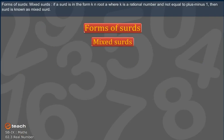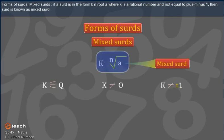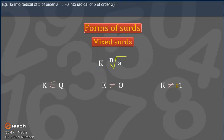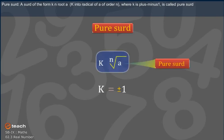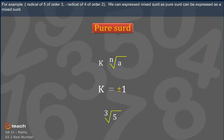Forms of Surds. Mixed Surds: if a surd is in the form k times the nth root of a, where k is a rational number and k is not equal to plus or minus 1, then the surd is known as a mixed surd. For example: 2 times the cube root of 5, minus 3 times the square root of 5. Pure Surd: a surd of the form k times the nth root of a, where k is plus or minus 1, is called a pure surd. For example: the cube root of 5 minus the square root of 4.